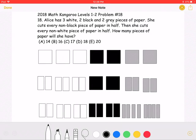As stated in the problem, Alice will start with three white, two black, and two gray pieces of paper.